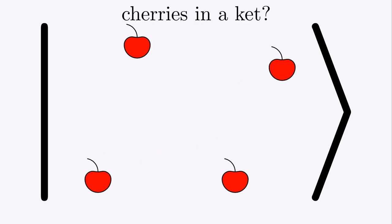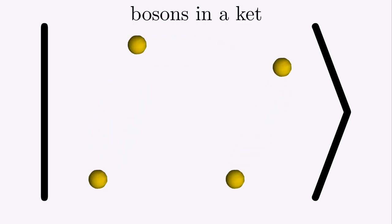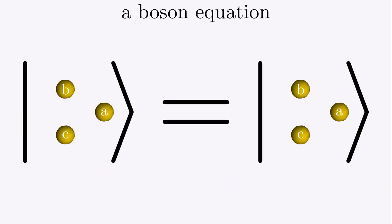For example, take some cherries and put them in a ket. We don't usually do this because cherries are way too complicated. It makes more sense to put particles in a ket. Here's three identical bosons in a ket. I put letters on each boson just so we can see where they move to. The letters are not real. These bosons are all identical. When we swap them around, the kets are equal. After every swap, we just get back the same quantum state. The universe doesn't notice our swaps. Reality is the same after each of the swaps.